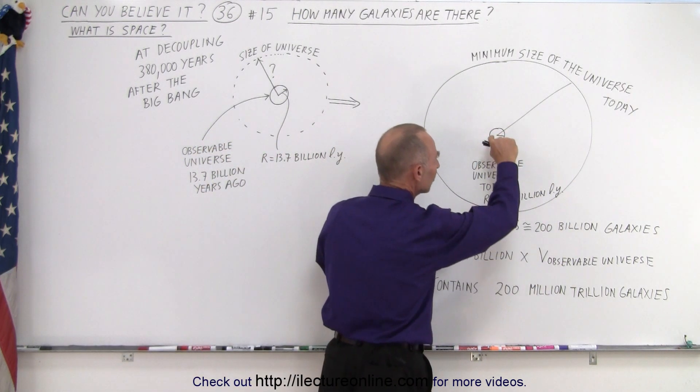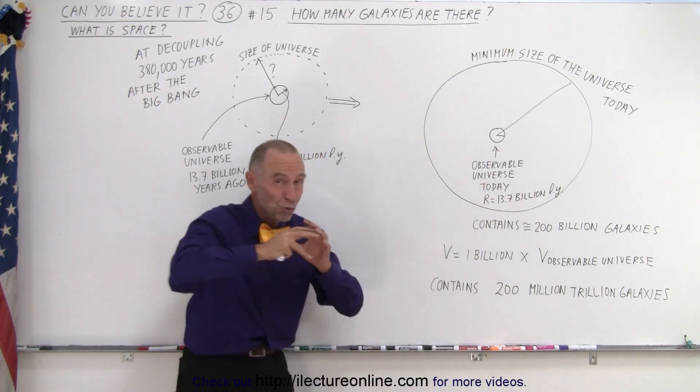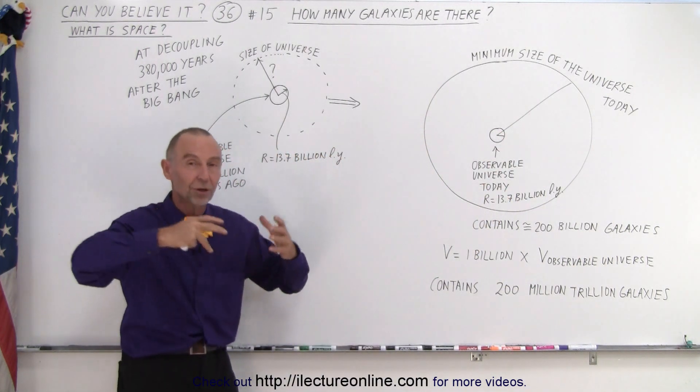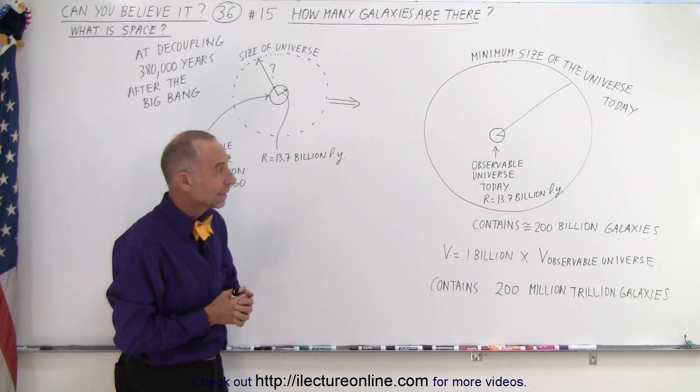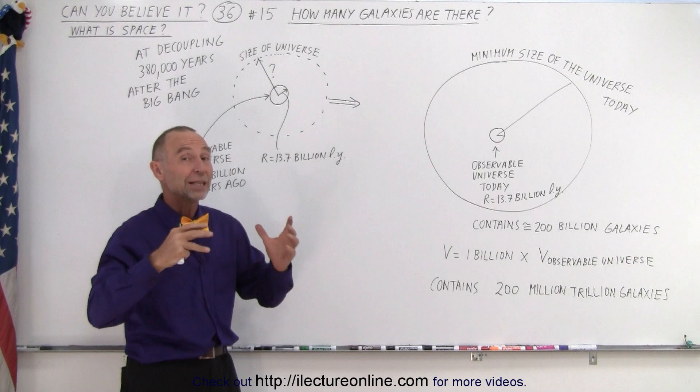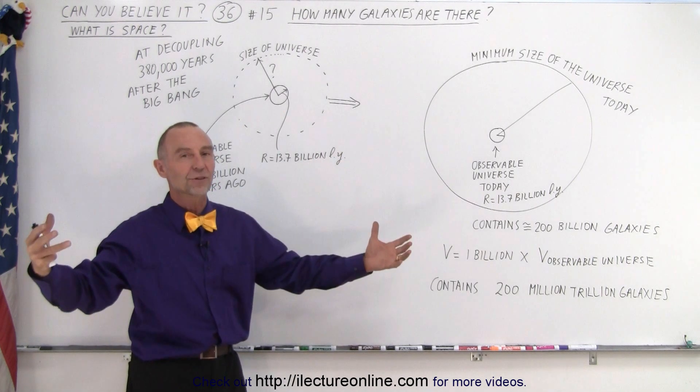And those 200 billion galaxies within that tiny portion, which is still enormous in size and enormous in the quantity of galaxies, each galaxy being enormous in size on its own, it's just a small portion of what we now think the entire universe is.